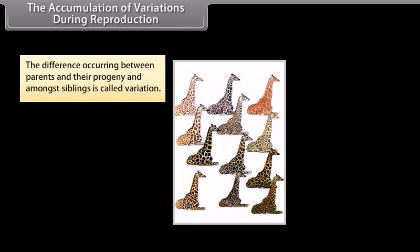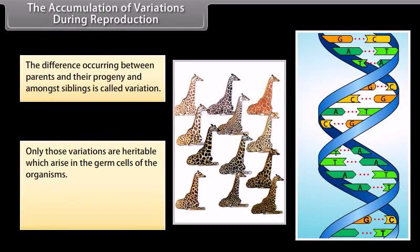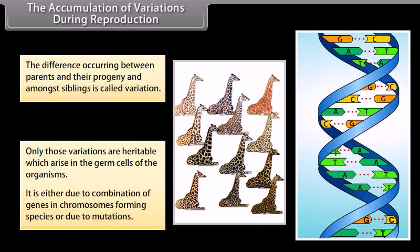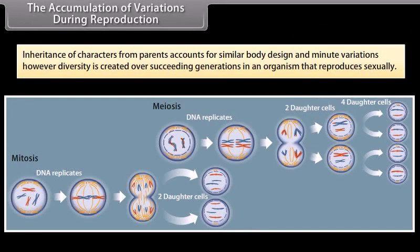The accumulation of variations during reproduction. The difference occurring between parents and their progeny and amongst siblings is called variation. Only those variations are heritable which arise in the germ cells of the organisms. It is either due to combination of genes in chromosomes, forming species, or due to mutations. Inheritance of characters from parents accounts for similar body design and minute variations. However, diversity is created over succeeding generations in an organism that reproduces sexually.